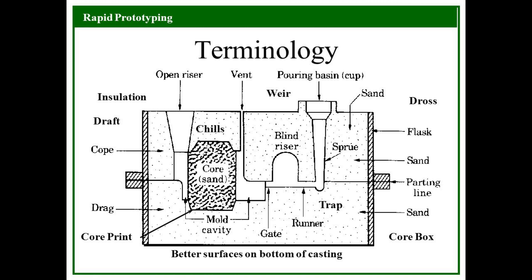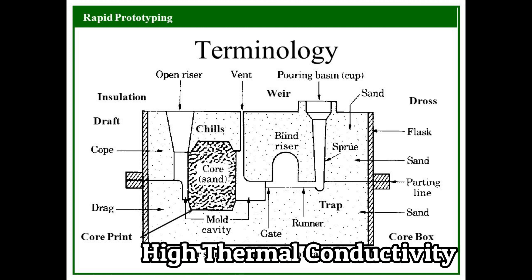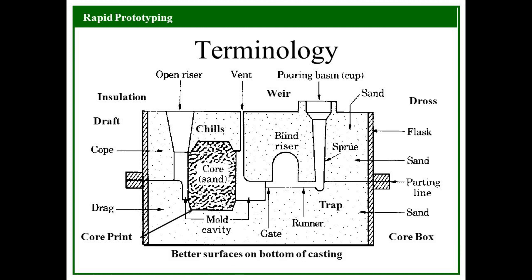Next are chills. These chills are generally solid metal pieces which are placed into the cavity to increase the cooling rate. Mainly they are used to create directional solidification of molten metal. They have high thermal conductivity. And the last one are vents. These are small passages made in the mold which allow gases to escape during solidification.